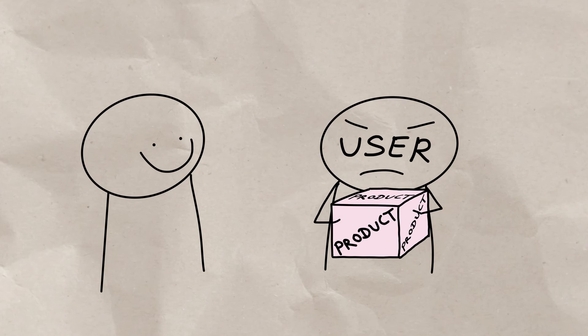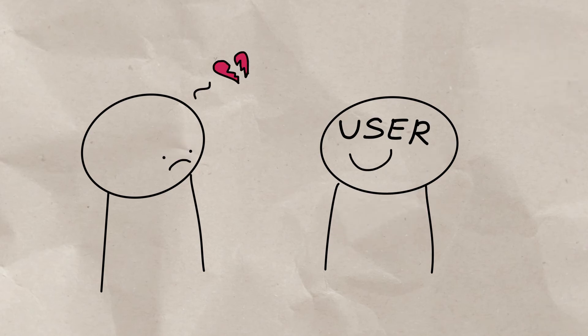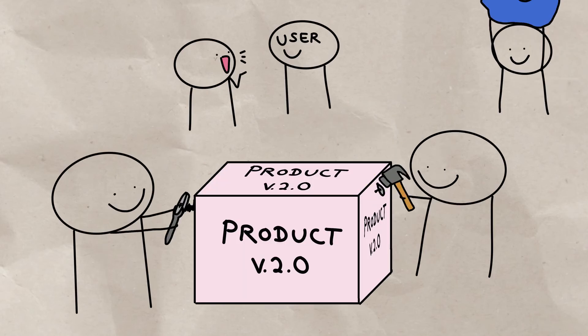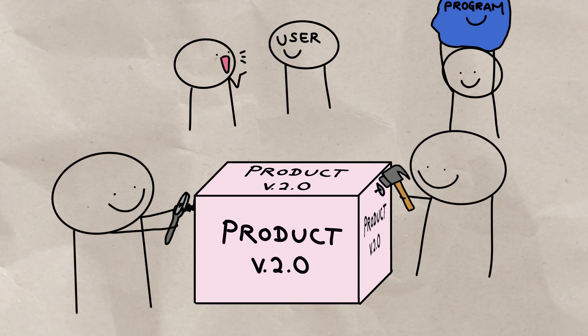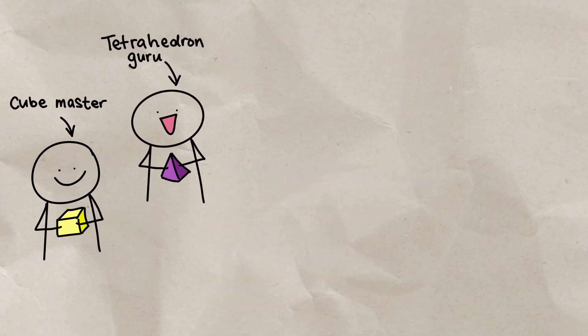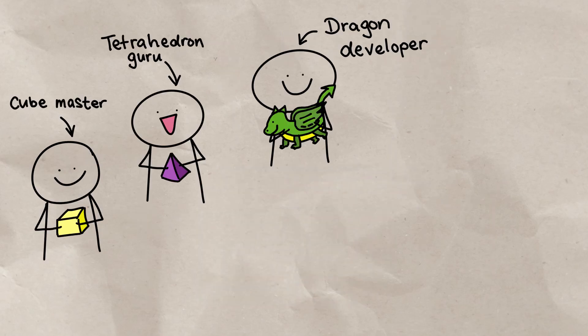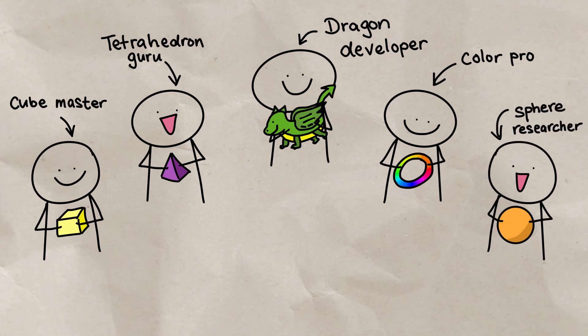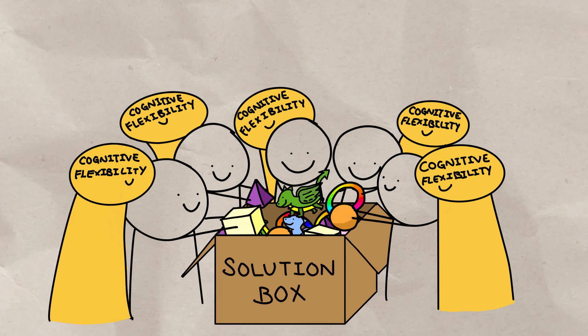So when we face an unexpected setback and need to pivot, collaboration becomes especially valuable and can set the stage for improving your cognitive flexibility. A team with a diverse set of backgrounds and experiences is better positioned to see the situation from many perspectives, and can come up with a variety of solutions.